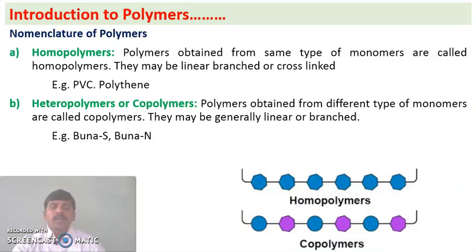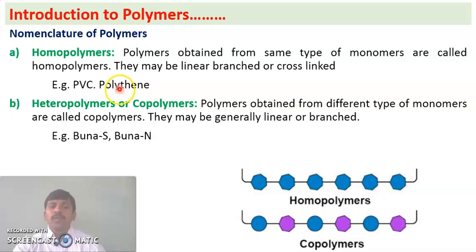The next concept is nomenclature of polymers — naming of polymers. Homopolymers are the polymers formed from only one type or same type of monomers. Example: polythene is formed from ethylene — we take a number of ethylene molecules all of the same type, so polythene is an example of a homopolymer.